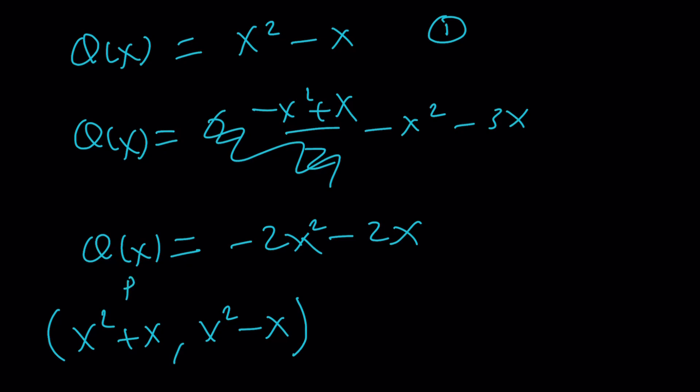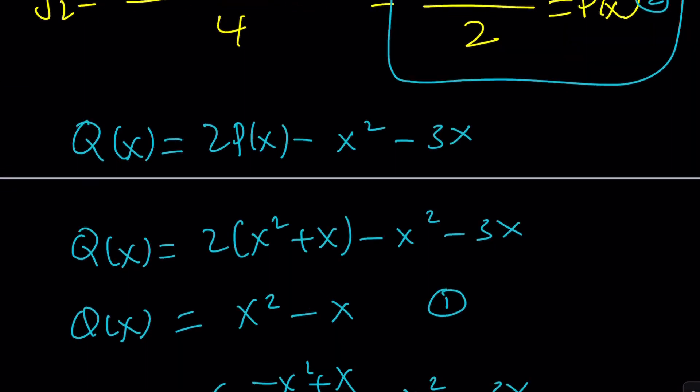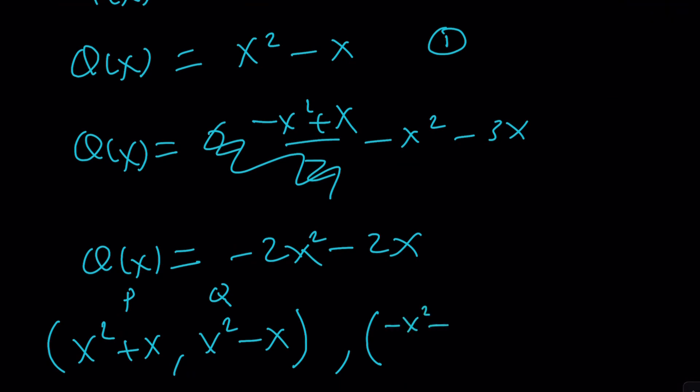And then from here, the second solution for Q(x) becomes negative 2x squared minus 2x. Therefore, we can write the solution as, you know, x squared plus x, comma, what is the first solution? x squared minus x. And then that was, first one is P, second one is Q, by the way. Or, we can write the first solution as negative x squared plus x over 2, and the second one as negative 2x squared minus 2x.